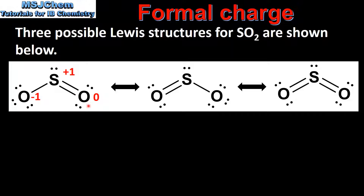Note that for a neutral compound the sum of the formal charges must equal zero. For the Lewis structure in the middle we get a formal charge of zero for the left oxygen atom, plus one for the sulfur atom, and negative one for the right oxygen atom.